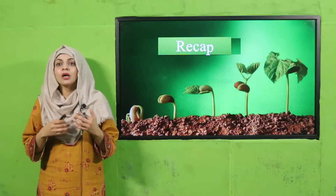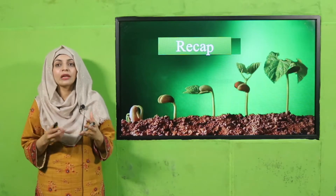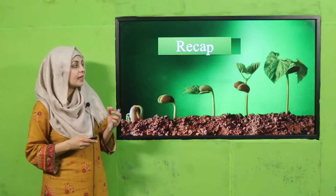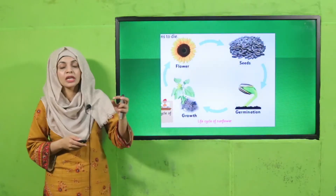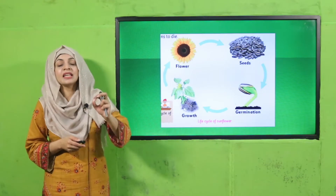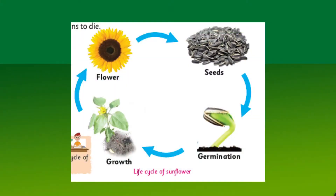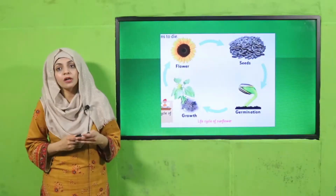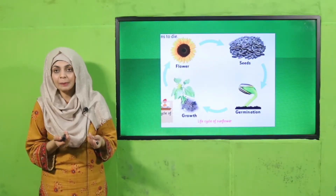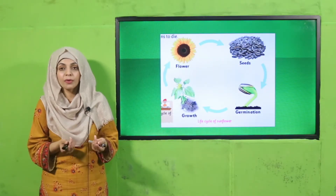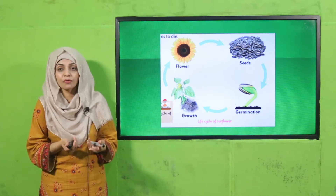As you know, we are discussing the life cycle of plants — how plants have different stages. It starts from a seed, then it germinates, then it enters into the growth and development phase, and then it enters into the reproduction stage. These are the different life stages of a plant. We also did a practical on this.